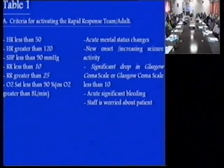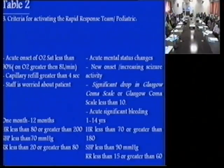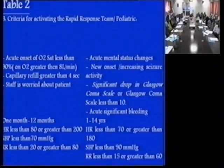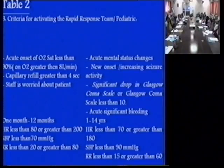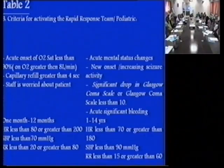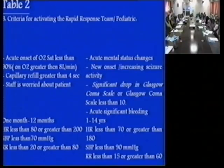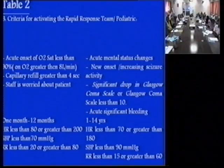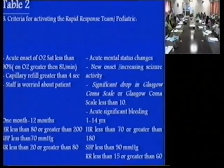The pediatric criteria are almost the same, except the vital sign thresholds differ by age group. From one month to one year there are certain numbers, and from one year to 14 years — in Saudi Arabia pediatrics are defined up to 14 years old — the readings differ. All other criteria remain the same as those used for adults.